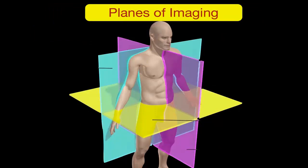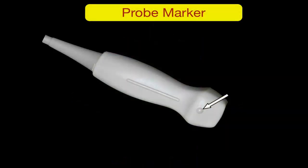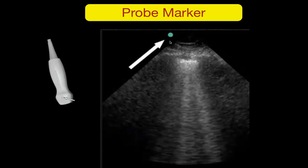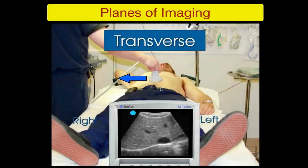In ultrasound we have endless planes of image, with three main planes: coronal, sagittal, and transverse. The probe has a marker that corresponds to the marker on the screen, which is always on the left side of the screen except in echocardiography where it is on the right. In a transverse view, the marker on the probe points to the right side of the patient, giving an image similar to CT — as if looking from the patient's feet — with right, left, anterior, and posterior orientations visible.